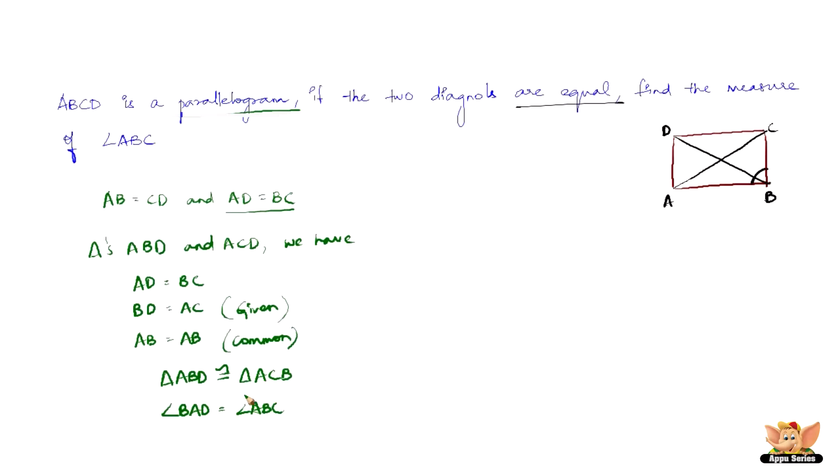Now, once we prove that two triangles are congruent, corresponding parts of congruent triangles are equal. So we have used that route to prove this one. So now,